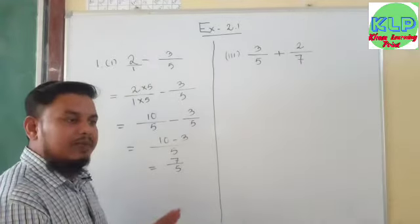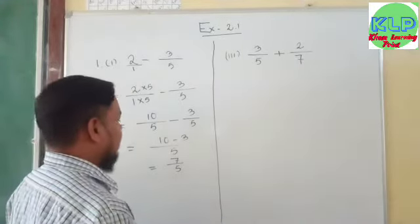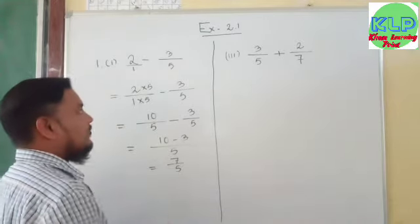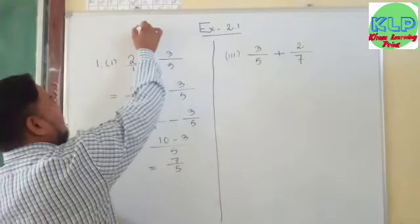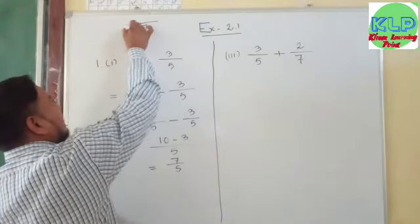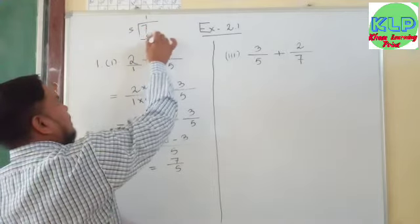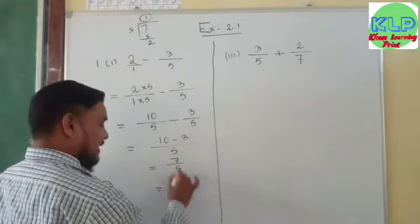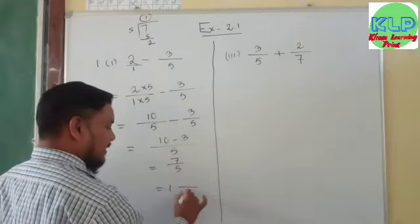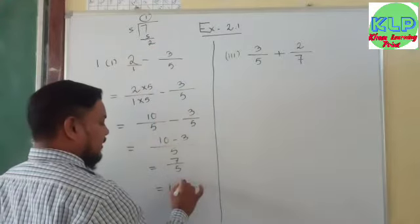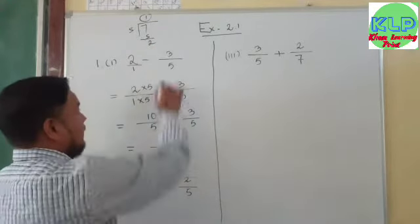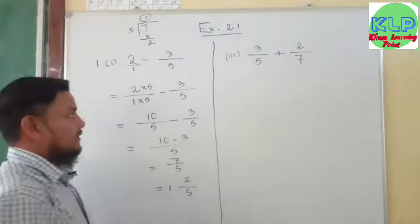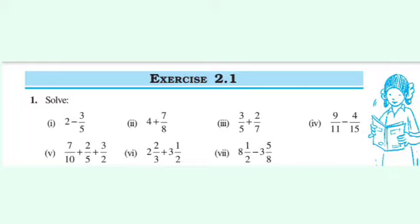We need to convert this improper fraction to a mixed fraction. To do that, divide 7 by 5: 5 ones are 5, the remainder is 2. So the whole number is 1, the denominator stays 5, and the remainder 2 is the numerator. The answer is 1 and 2 upon 5.